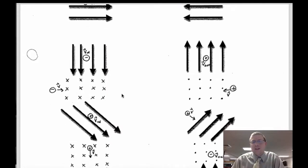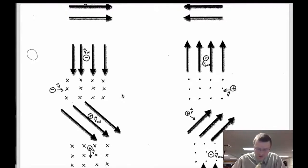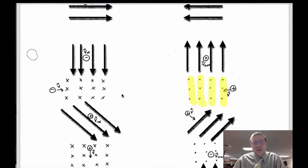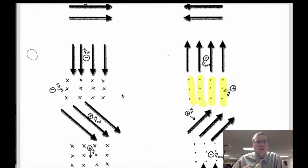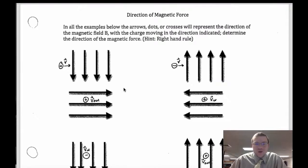For problems with x's and dots: to represent magnetic field coming at you, think of an arrow flying straight at your face — you'd only see the tip of the arrow, which is the dot. When you fire an arrow away from you and it hits a target, you'd see the feathers on the end — those are the x's. So x's represent magnetic field going into the page, and dots represent field coming out of the page. Practice through these problems using your right-hand rule: hand in the direction of velocity, curl in the direction of the magnetic field, and your thumb gives you the force the charge feels — only if the charge is moving perpendicular to the field.